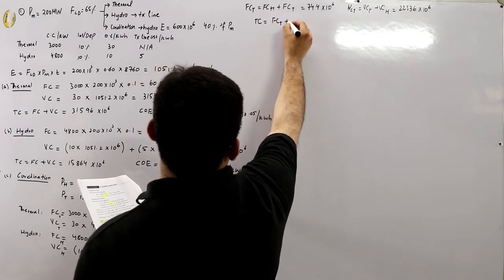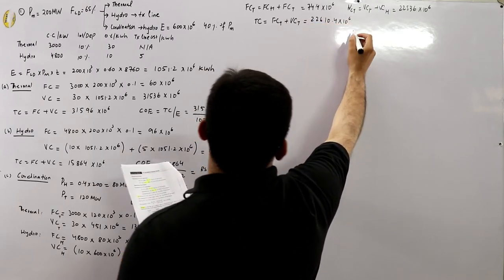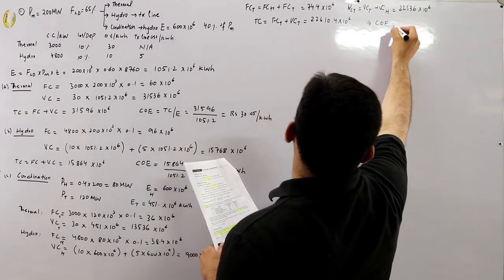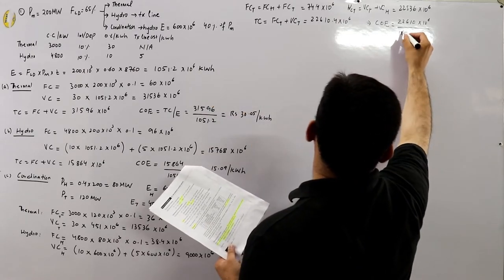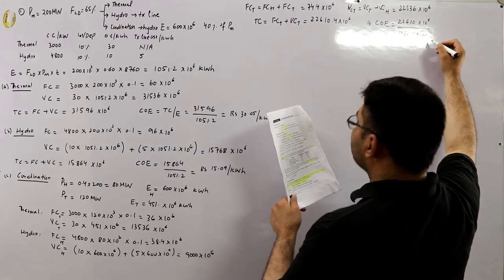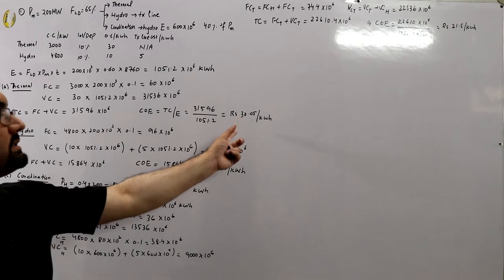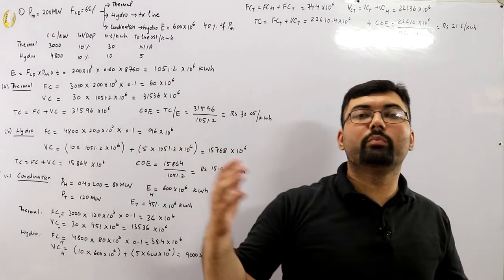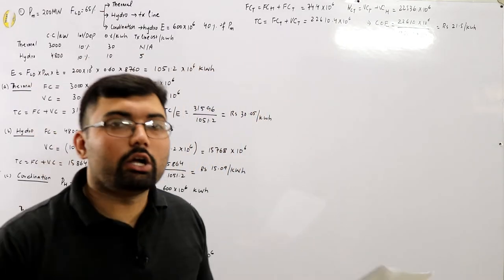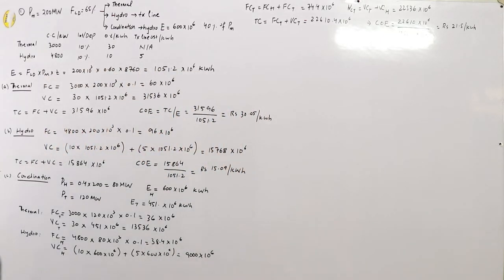Total cost for coordination = 74.4 × 10^6 + 22536 × 10^6 = 22610.4 × 10^6. Cost of electricity per unit = 22610.4 × 10^6 ÷ 1051.2 × 10^6 = Rs. 21.5 per kilowatt hour. This is between the thermal-only and hydro-only costs, but with coordination the problems of fuel shortages, water scarcity, and rainfall variability can all be better managed.